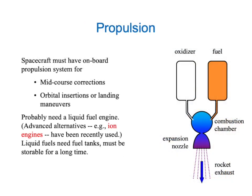Our spacecraft is also going to need an onboard propulsion system — it's going to need that to make small mid-course corrections, and also, if it's going to make any orbital insertions or landing maneuvers, it has to have a very powerful rocket system for that. You're probably going to need a liquid fuel engine. There are some alternatives — the Dawn spacecraft, for example, used an ion engine. But if you have liquid fuels, you have to have tanks for them, and you have to choose fuels that are storable for a long time so that the system's ready to use when you get to your destination.